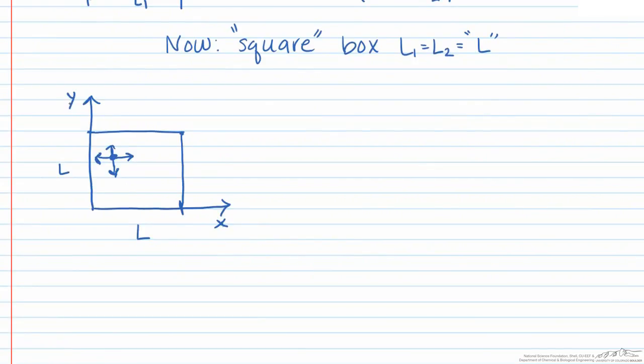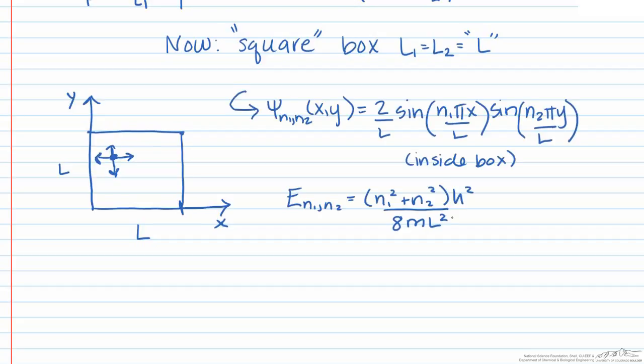So now our particle is in a square two-dimensional box, and our wave equation and corresponding energy levels become the following, where we have substituted in length L.